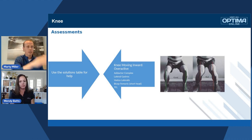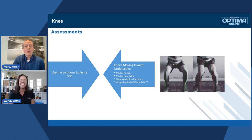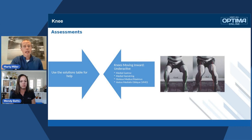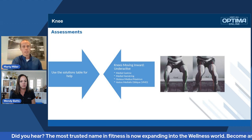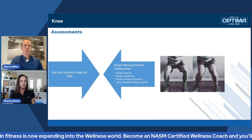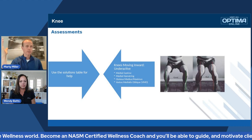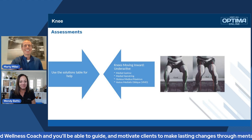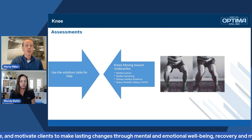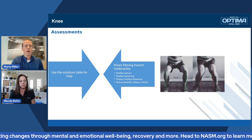Now for the underactive muscles — the ones we want to upregulate, have them join the party, do more work, the yin to the yang, so there's symmetry on both sides for ideal movement. If the lateral gastroc was overactive, the medial gastroc will be underactive. If the lateral hamstring or biceps femoris short head is overactive, then the medial hamstring will be underactive. The glute max and glute medius — I have never seen them overactive on any single movement compensation. And then the VMO, the teardrop muscle that helps stabilize the knee, would be underactive in this area.